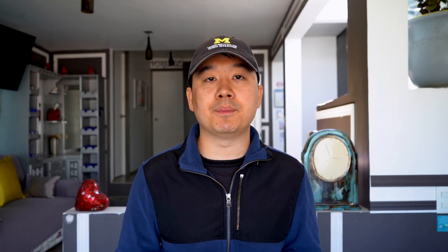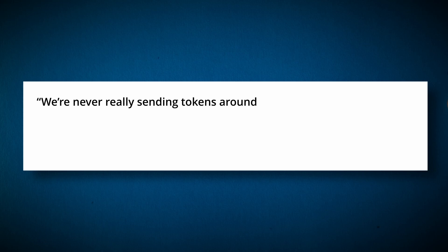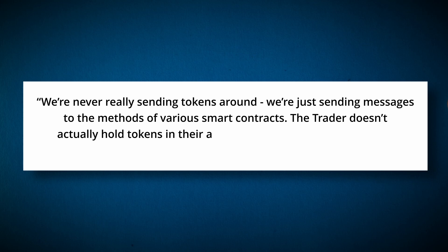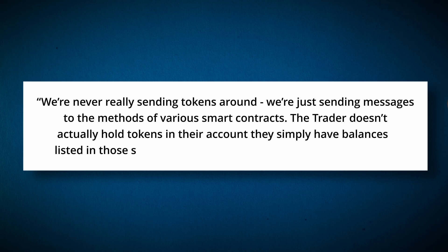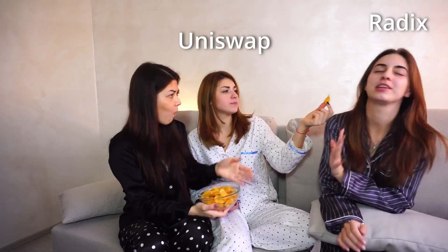A big reason why all that complexity is needed is because there's no inherent notion of a token in Ethereum. Token A and token B are just separate ERC-20 smart contracts that each hold a list of balances. As the Radix blog explains, we're never really sending tokens around — we're just sending messages to the methods of various smart contracts. The trader doesn't actually hold tokens in their account; they simply have balances listed in those smart contracts associated with their private key. Those pesky token approvals exist because the Uniswap smart contract is actually sending tokens for us. The point is that a ton of complexity is going on even for something as simple as a Uniswap trade, and the Radix team wanted to fix that.